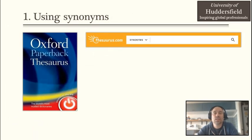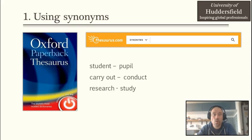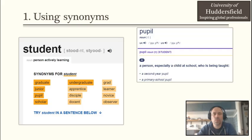First, let's start with using synonyms. For this you will need either a paperback dictionary or an online thesaurus. Generally speaking, I prefer the paperback thesaurus simply because it contains example sentences showing how the different words are used in context, and that helps you a great deal to understand which one of the synonyms you should be using. We all know and have used synonyms before — for example, pupil instead of student, or carry out instead of conduct, or research instead of study. However, when you use the thesaurus, you will see that there is a long list of words suggested, but not all of them can be used in place of the word in that given context, because although all these words are synonyms for the original word, the context might be different.